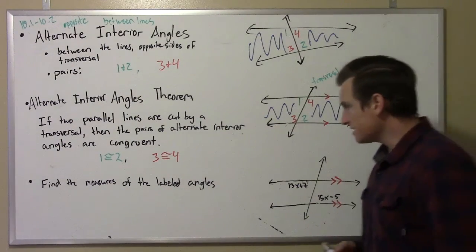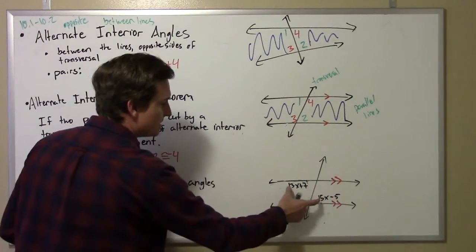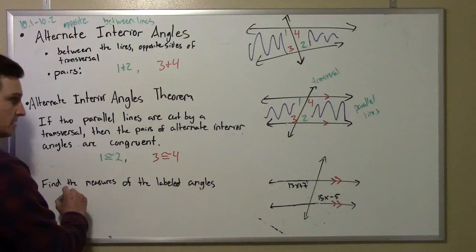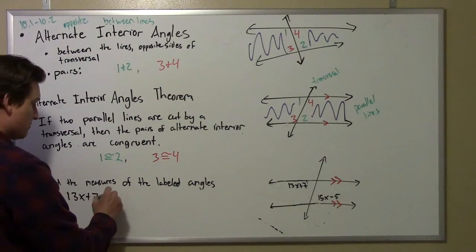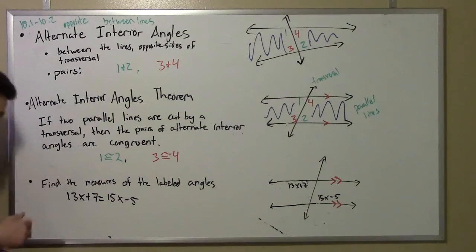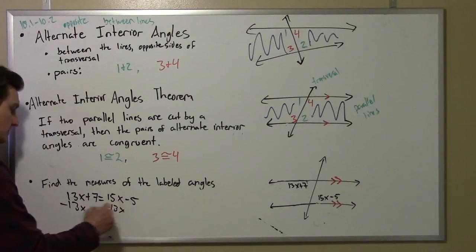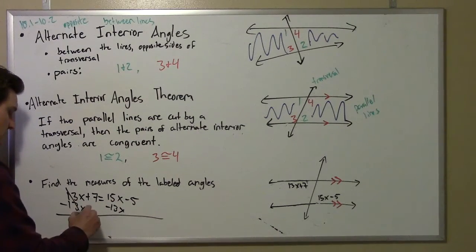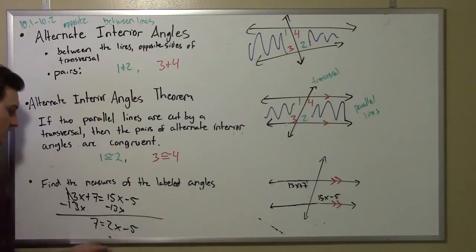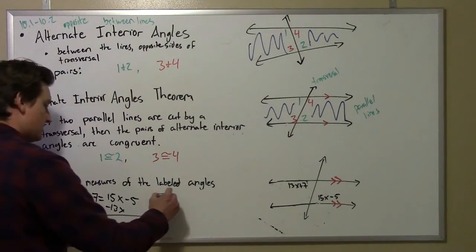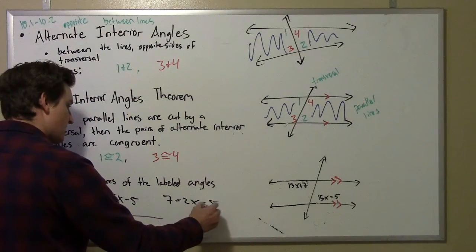Let's set this up. Because these two lines are parallel, these angles have to be congruent. So 13x plus 7 equals 15x minus 5. Let's start grouping our x's. So 7 equals 2x minus 5. We'll add 5 to both sides.